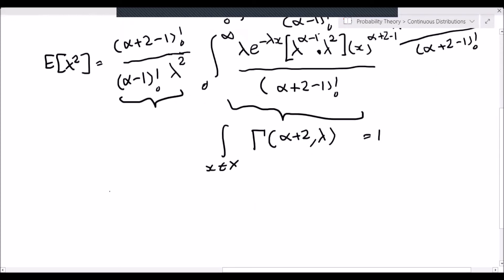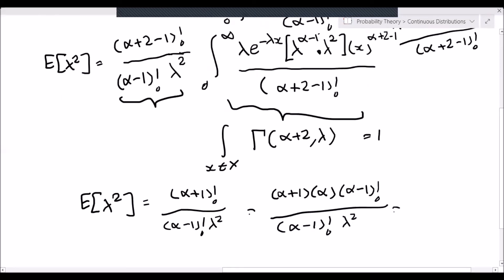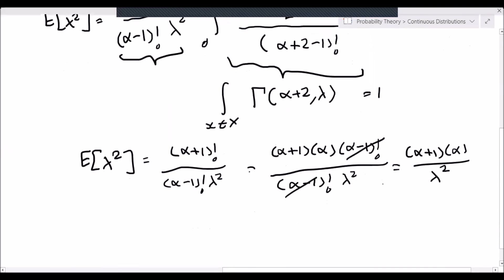All that remains is to figure out what is the constant on the left-hand side: it is alpha plus 1 factorial, divided by alpha minus 1 factorial times lambda squared. This equals alpha plus 1 times alpha times alpha minus 1 factorial, divided by alpha minus 1 factorial times lambda squared. The alpha minus 1 factorials cancel, leaving us with alpha plus 1 times alpha over lambda squared. So the expected value of x squared equals alpha times alpha plus 1 over lambda squared.